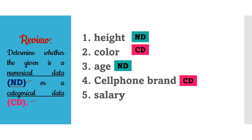Number four, cell phone brand is also a categorical data because we cannot express it as numbers. Cell phone brands can either be Apple, OPPO, Samsung, and so on. Number five, salary is a numerical data because salaries are expressed as numbers. I hope that you got five over five in that review.